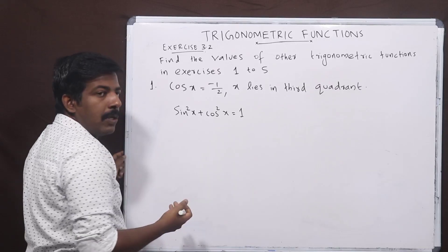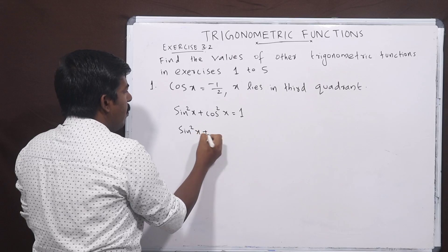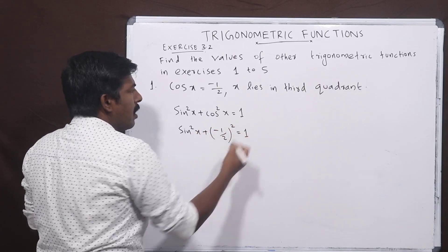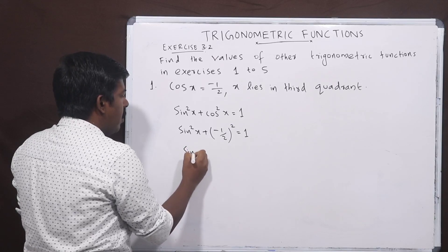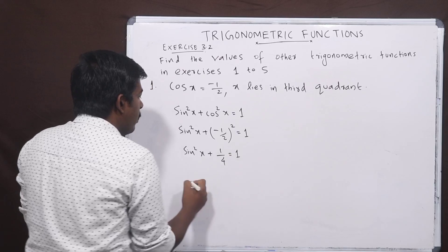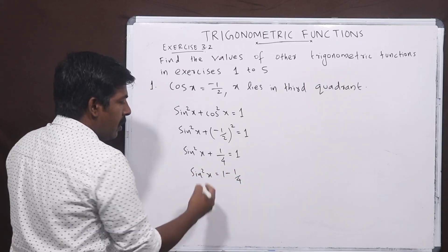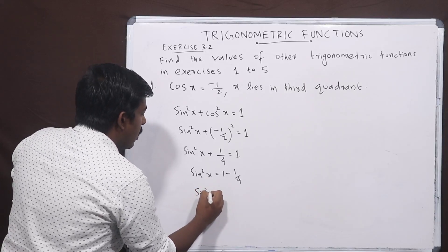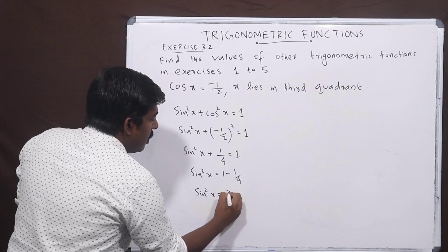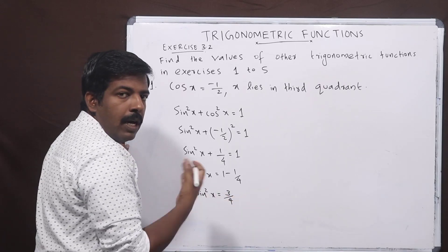The identity is applied. Sin squared x plus (minus 1 by 2) squared is equal to 1. Then sin squared x plus 1 by 4 is equal to 1. Then sin squared x is equal to 1 minus 1 by 4. Taking LCM and simplifying, we have 4 minus 1 over 4, so sin squared x is equal to 3 by 4.